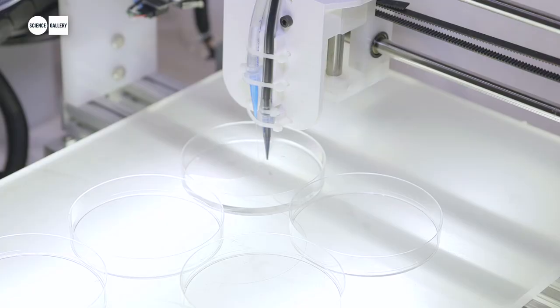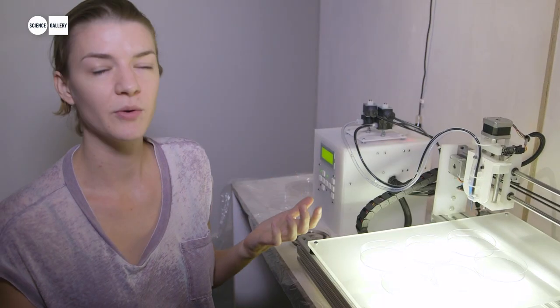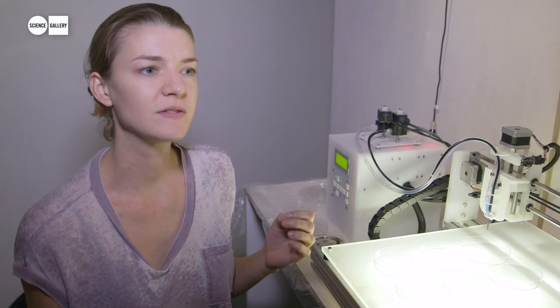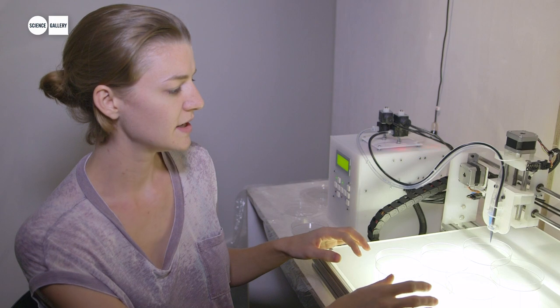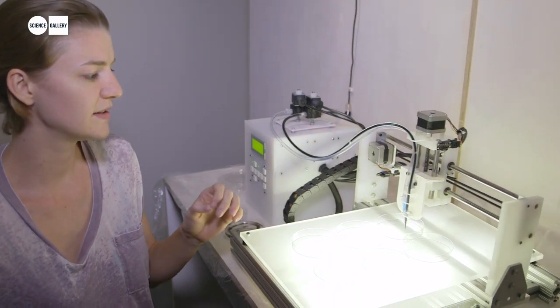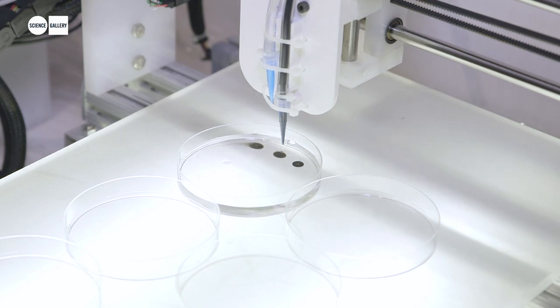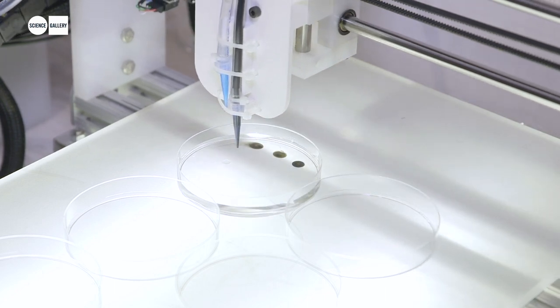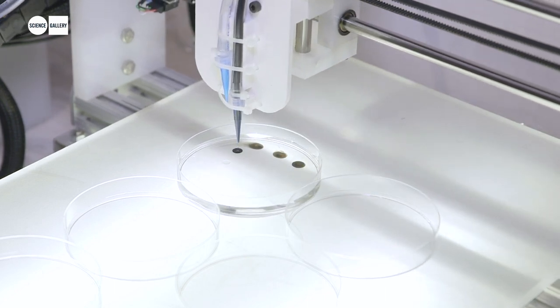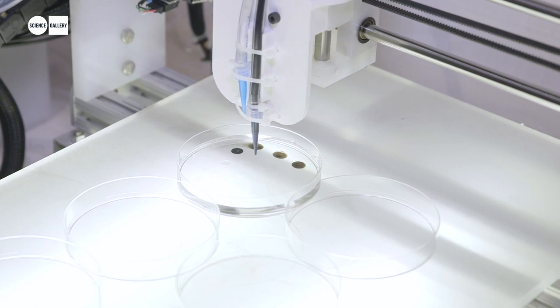This is a machine that's printing with salt solutions, and what it prints are called protocells. So these are things that look like natural cells in that they have a nucleus and a cell wall. But they're not actually made of any kind of biological material, per se. The patterns are created just by the difference between the two liquids that are in the machine.